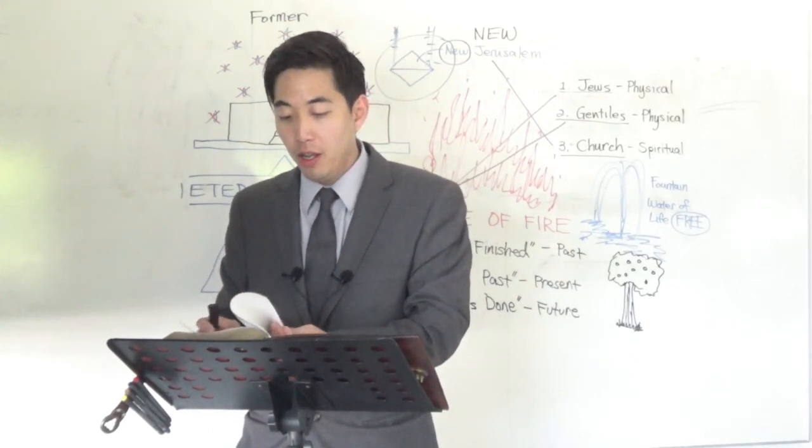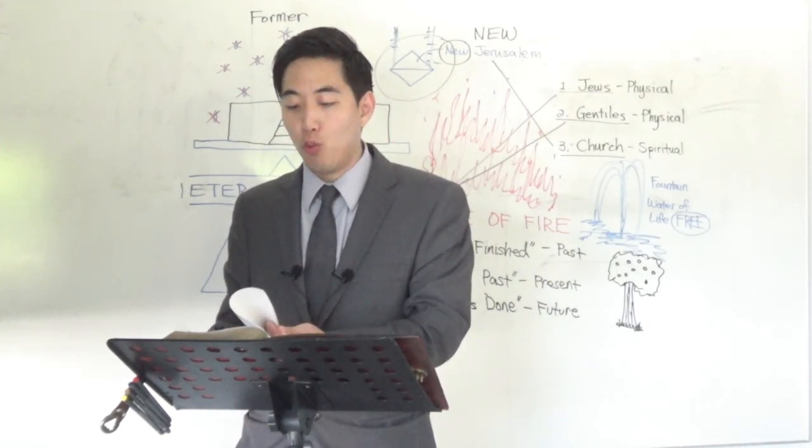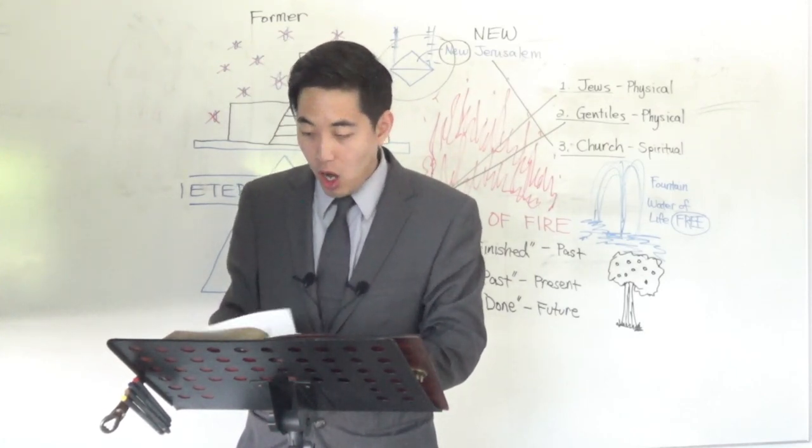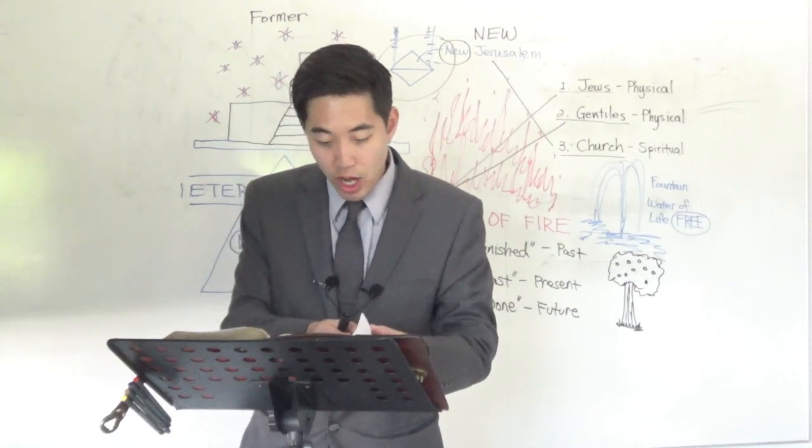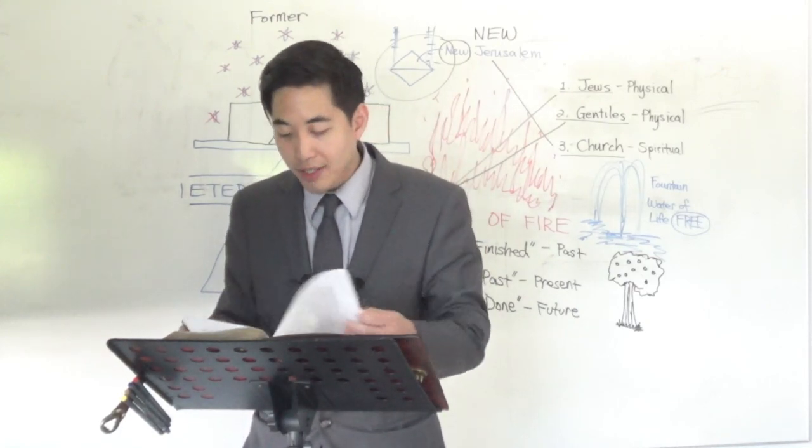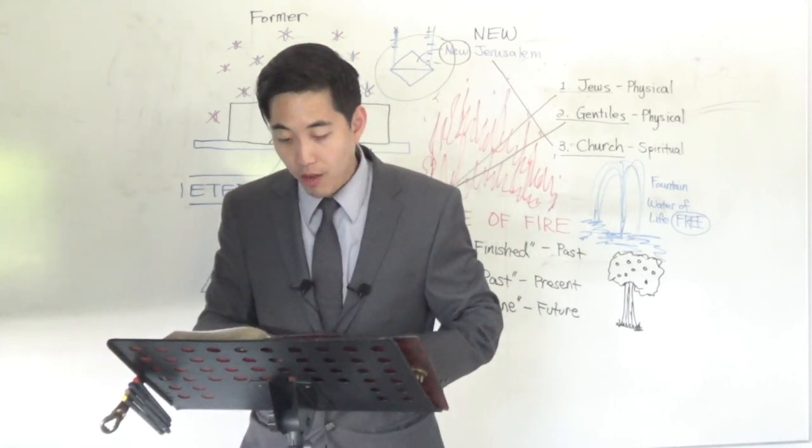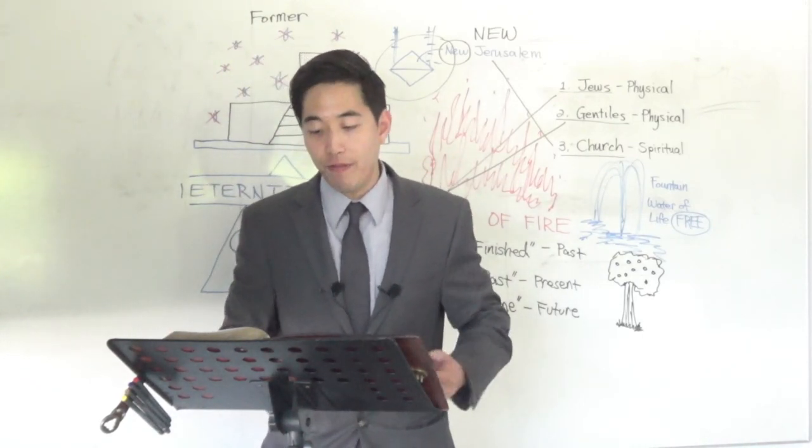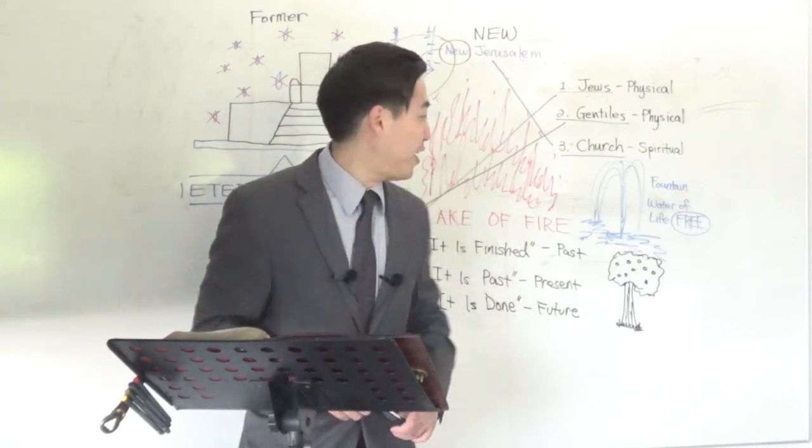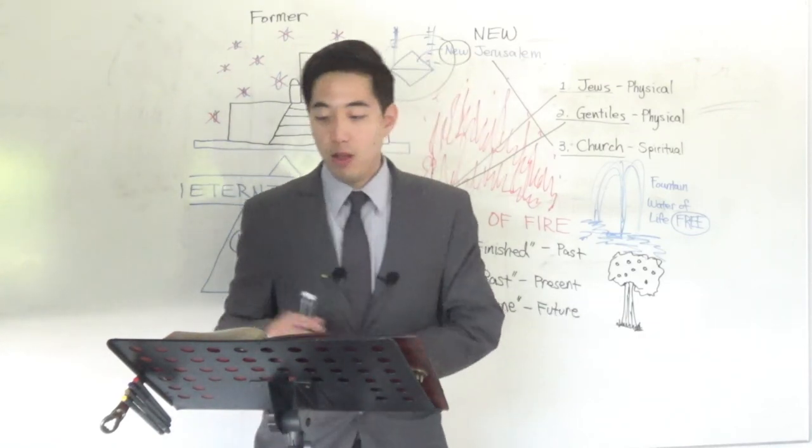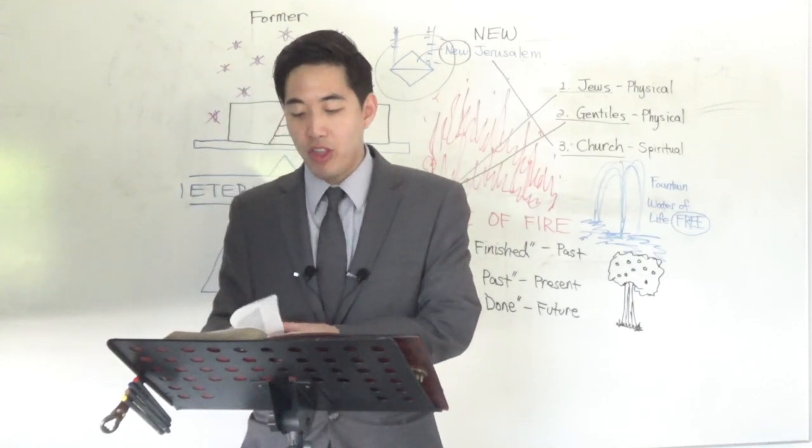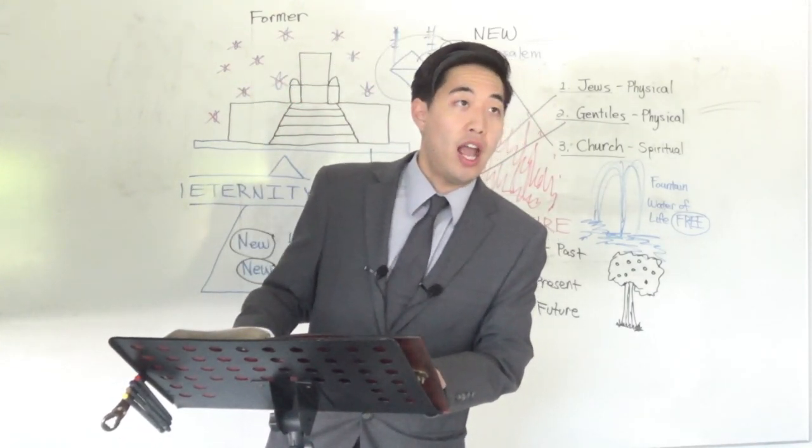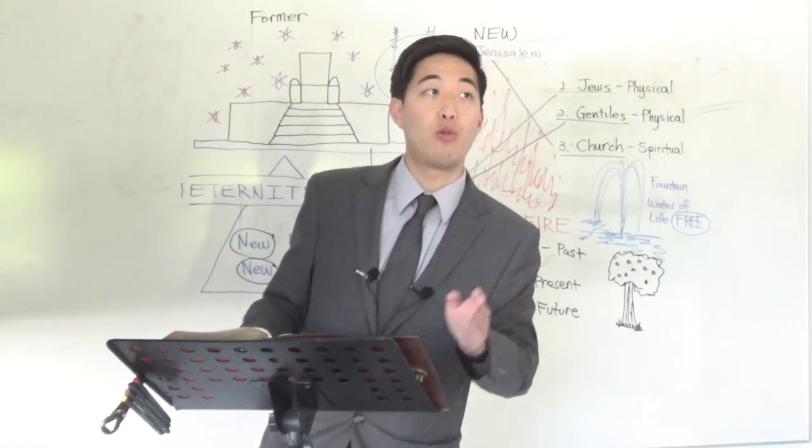Mankind did not have to work for the fruit that he ate during the Garden of Eden, right? It was all free. But now the Lord involved works at Revelation 22 because something happened that Eve did. Go to the book of Genesis chapter 2. Now notice what God said to Adam.